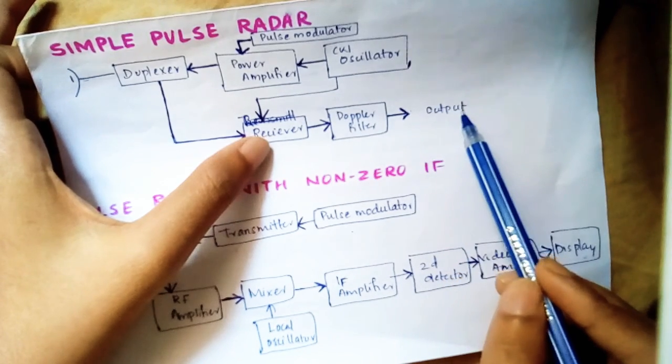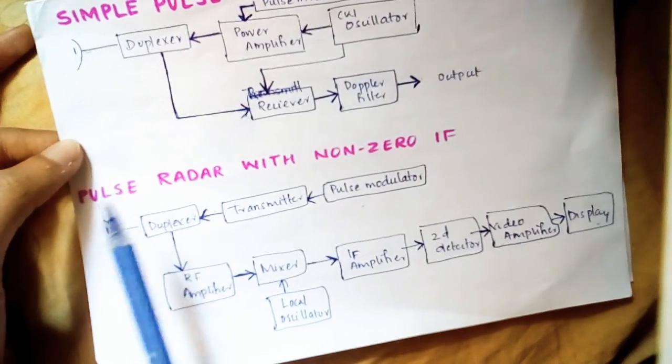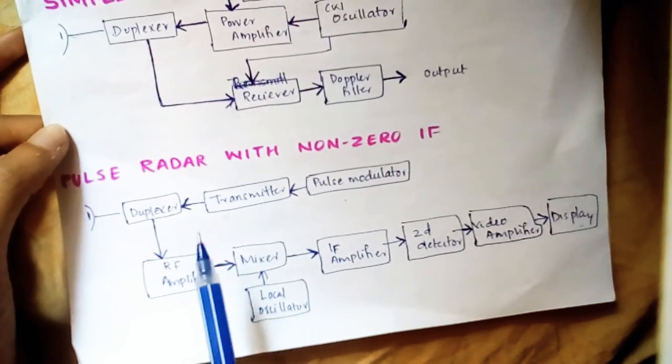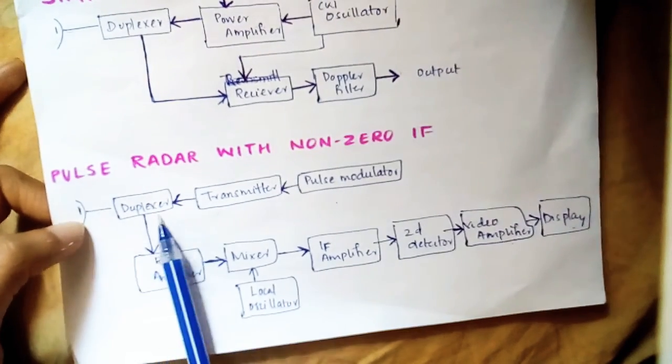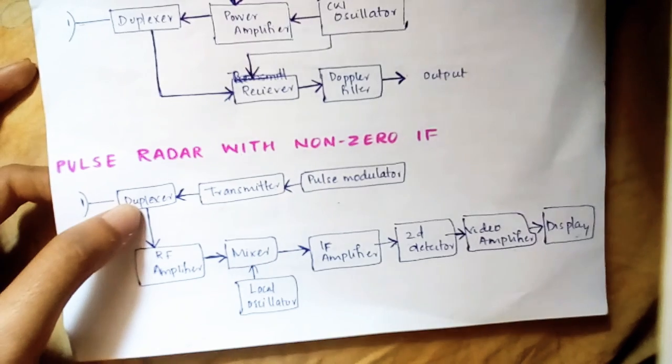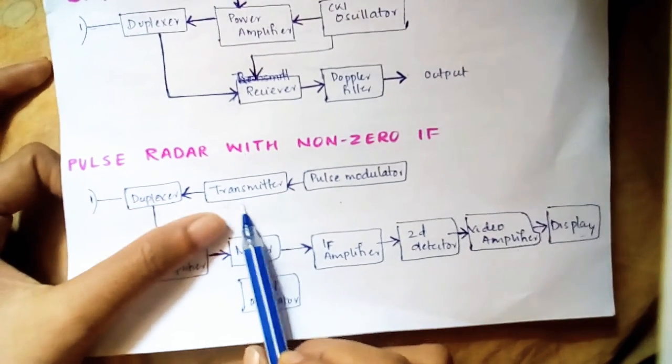Now to the second section, we have pulse radar with non-zero IF. Here also we have a single antenna and a duplexer. Since it is more complicated, we use a transmitter block to which the input is pulse modulator.